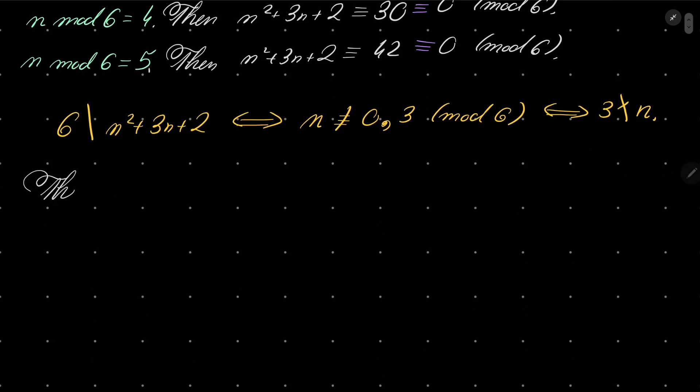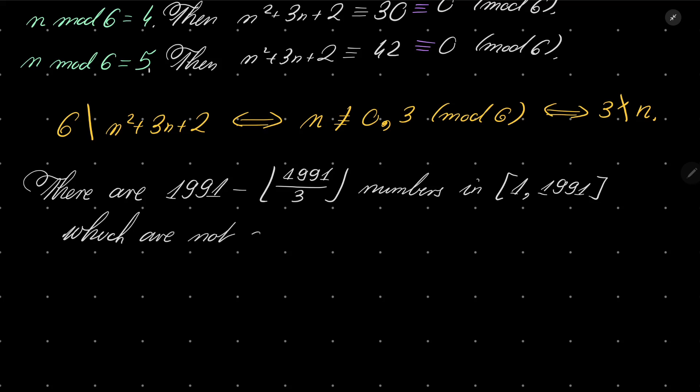So how many numbers are there which are not divisible by 3? Well, there are 1991 minus floor(1991/3) numbers in this interval which are not divisible by 3. And what is this number?